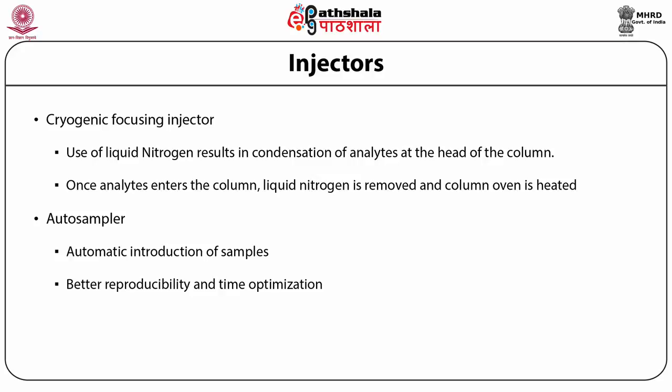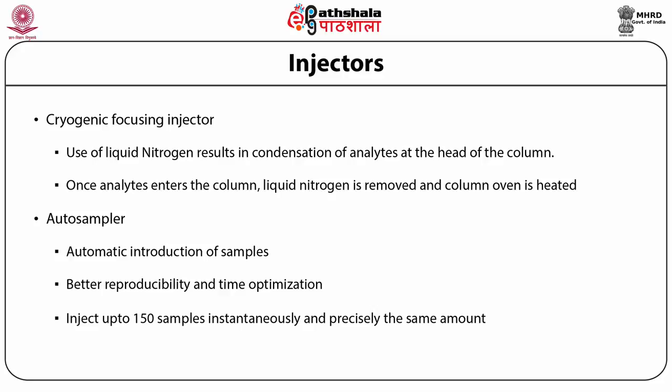For any experiment, its validity stands upon the reproducibility of results. While handling low volume samples, chances of error are high with manual loading. To overcome this, auto-samplers are used in gas chromatographic machines. Auto-samplers can inject up to 150 samples instantaneously with precisely the same amount of sample every time, consistently reproducing small volume injections and saving considerable labor cost and time.